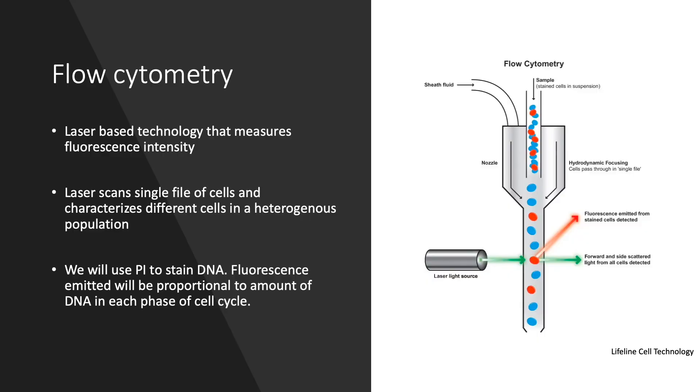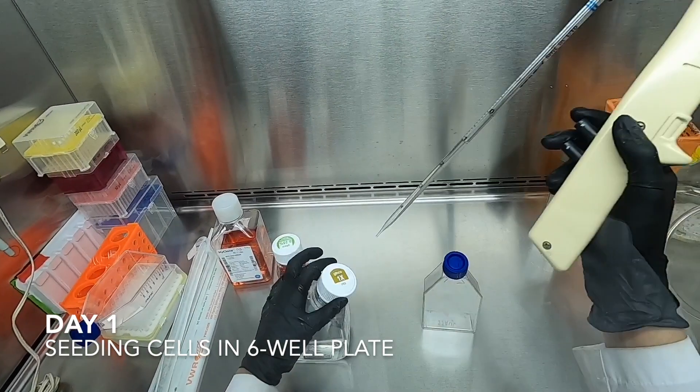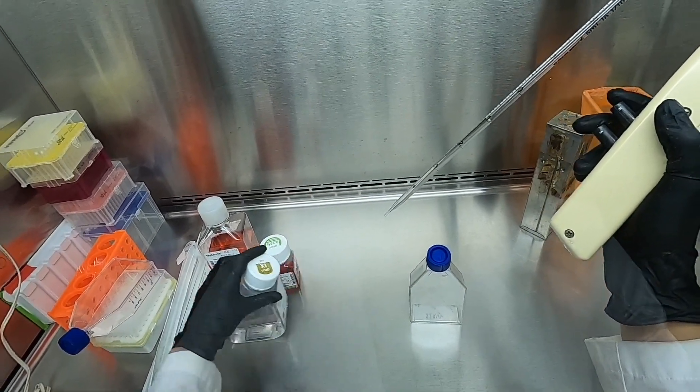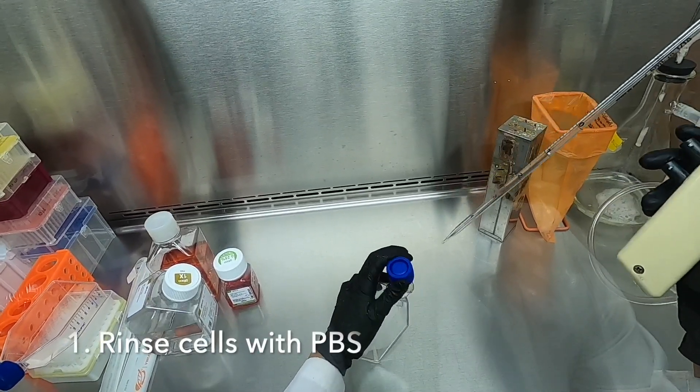We previously used PI in our cytotoxicity assay. Because PI is not permeable to cell membranes, we will be permeabilizing and fixing our cells in order to stain DNA for cell cycle analysis. So let's begin our experiment. We begin on day one by plating our cells in a six-well plate. This is done by following the same steps that we used in our previous video for cell passaging.